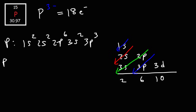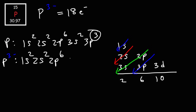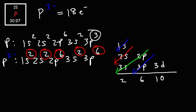For the P3- ion, we simply add 3 to the 3p exponent. So the configuration is 1s2, 2s2, 2p6, 3s2, and then 3p6. Adding up the exponents gives a total of 18, because the phosphide ion has 18 electrons. That's how you write the electron configuration of a negatively charged ion — increase the number of electrons based on the negative charge.